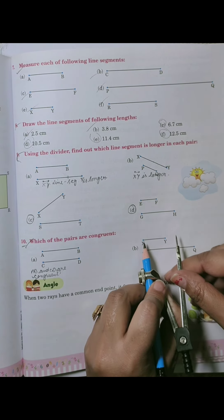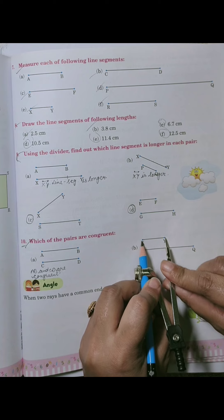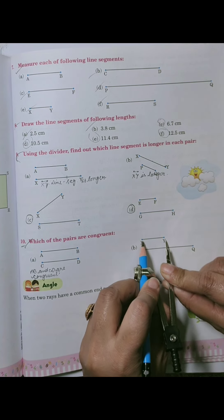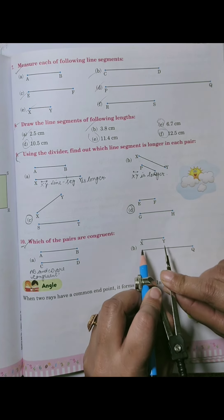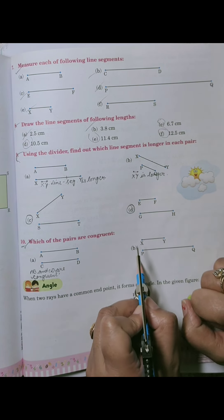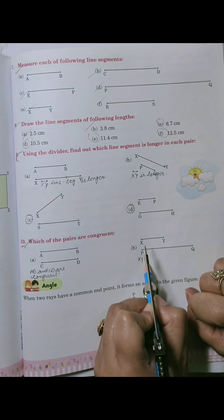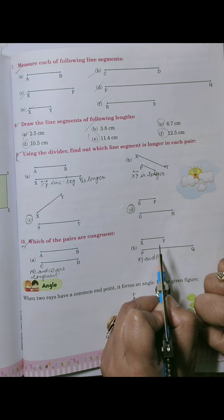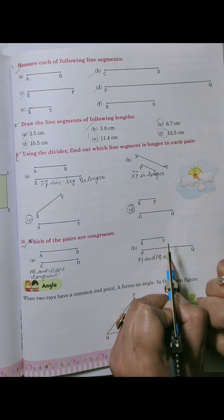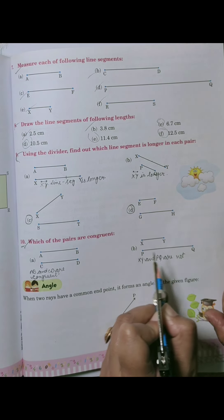And XY, B part. XY, it is not equal to this. So XY and PQ, PQ are not congruent, not congruent.